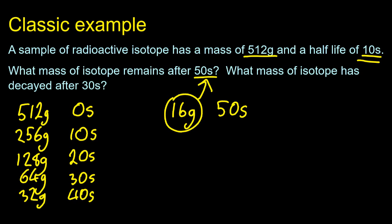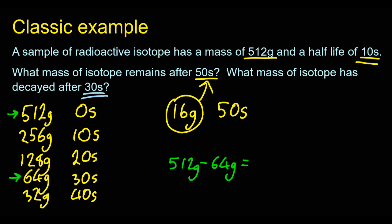The next question has a trick in it. What mass of isotope has decayed after 30 seconds? It's tempting to say 64 grams, but that's wrong. That's how much is left after 30 seconds. The amount that's decayed, we have to compare those two numbers. I started with 512 and I've got 64 left. So 512 minus 64 gives me 448 grams. That's the mass that has decayed.